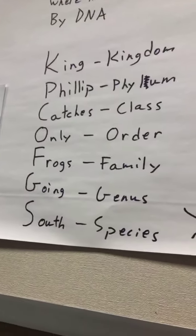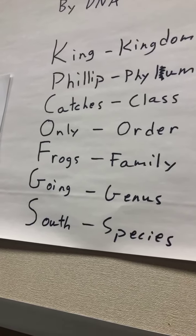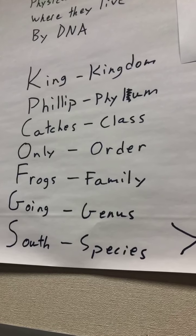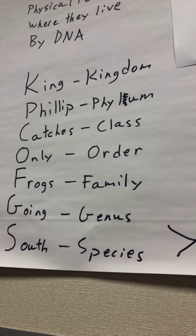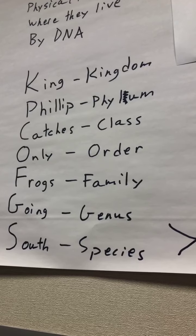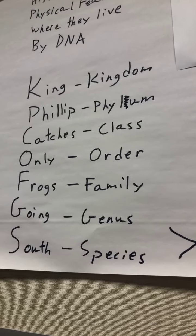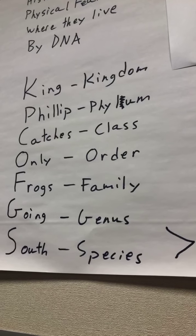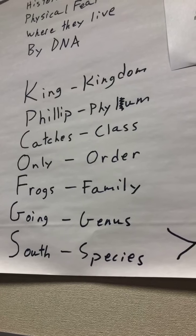To help you remember the order of all those classifications, you can remember: King Philip catches only frogs going south. I like that acronym, but there are a lot of them that you can use. King Philip catches only frogs going south: kingdom, phylum, class, order, family, genus, and species. But if you don't remember that, you don't really need it to create taxonomies, and a lot of times we don't learn that until high school, so it's okay if you're not learning that right now.